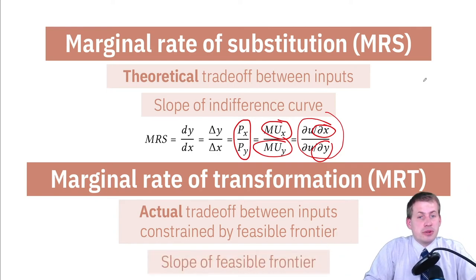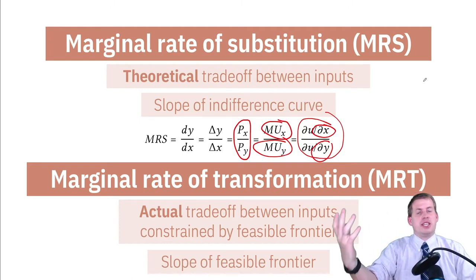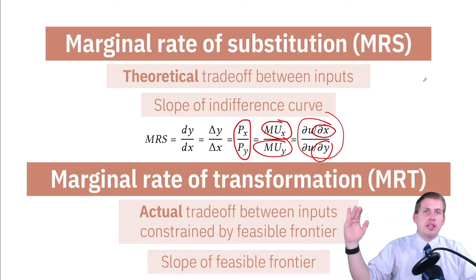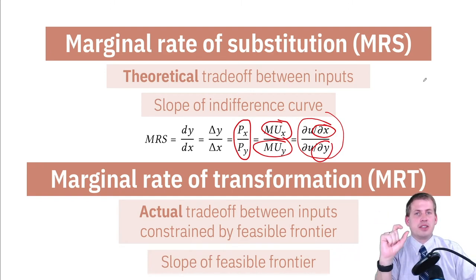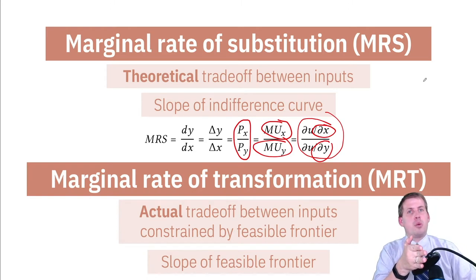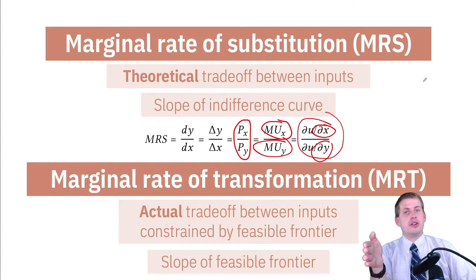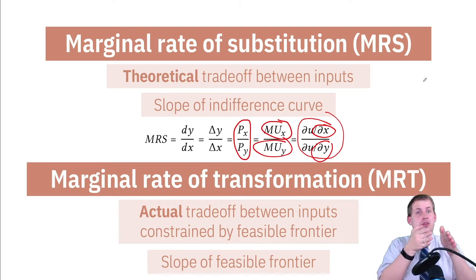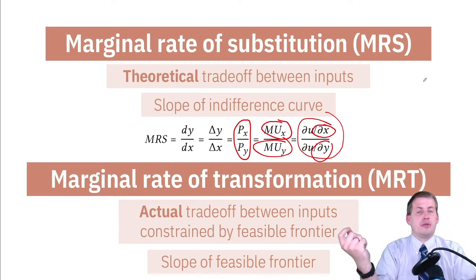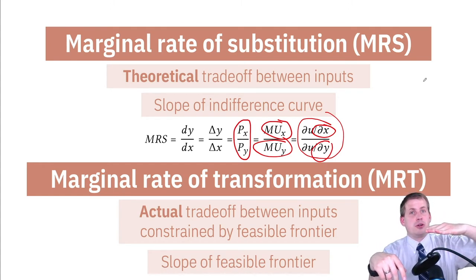The marginal rate of transformation is also a slope — the slope of that feasible frontier, or budget line, or production possibility frontier. It also has different slopes, as we saw when talking about opportunity cost. If you wanted to add one more worker to your production line for airplanes, going from three to four workers gets you a lot of marginal airplanes. But going from 15 to 16 workers doesn't get you many more — that's just a tiny amount, and so that tiny amount is a pretty flat slope versus a really steep slope.